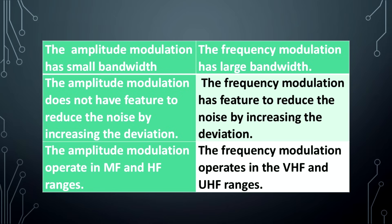Amplitude modulation does not have a feature to reduce noise by increasing the deviation. Frequency modulation has a feature to reduce noise by increasing the deviation. Amplitude modulation operates in MF and HF ranges. Frequency modulation operates in VHF and UHF ranges.